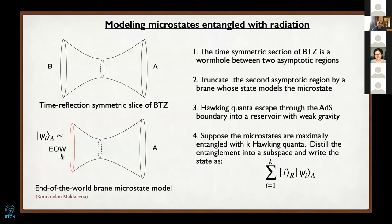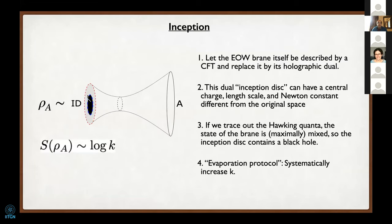We're going to play a trick: suppose this end-of-world brane is itself holographic—that the theory of the brane is itself a conformal field theory. There's plenty of precedent since many D-brane systems that build up the actual microstates of black holes in string theory have low energy theories described by a CFT. So we assume this end-of-world brane carries a conformal field theory on it, and allow that brane to be described by its holographic dual—this disc is the holographic dual of the end-of-world brane.